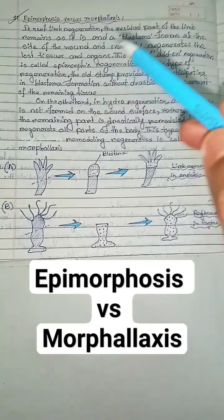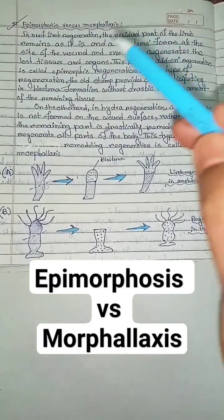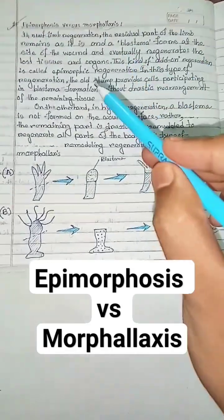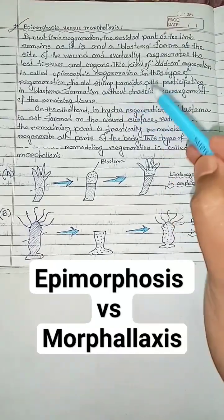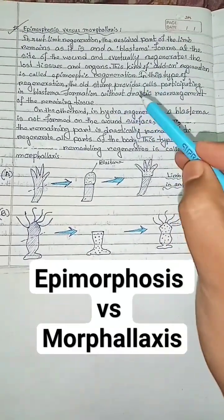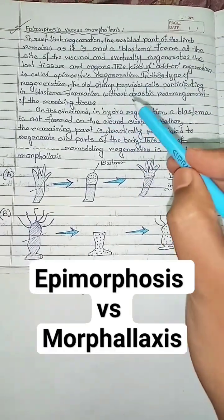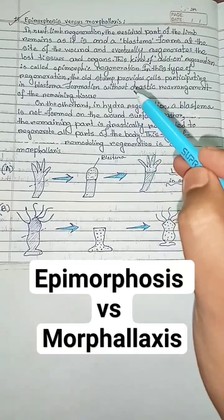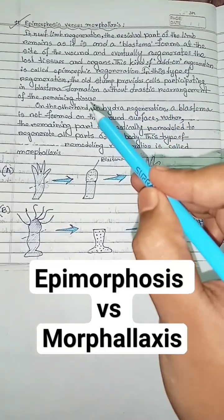In new limb regeneration, the differences between epimorphosis and morphallaxis: the residual part of the limb remains as it is, and a blastema forms at the site of the wound and eventually regenerates the lost tissues and organs. This kind of add-on regeneration is called epimorphic regeneration. In this type, the old stump provides cells participating in blastema formation without drastic rearrangement of the remaining tissue.